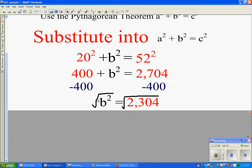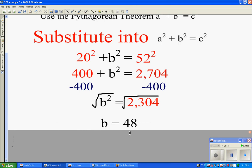To get rid of the square, I take the square root because it cancels out. And this is a perfect square, so it comes out to be 48. That's the missing leg of this triangle.